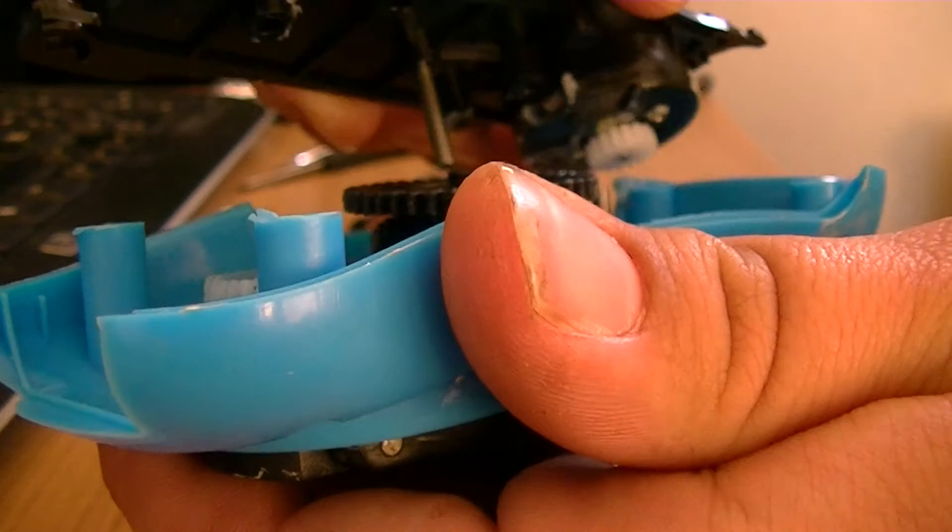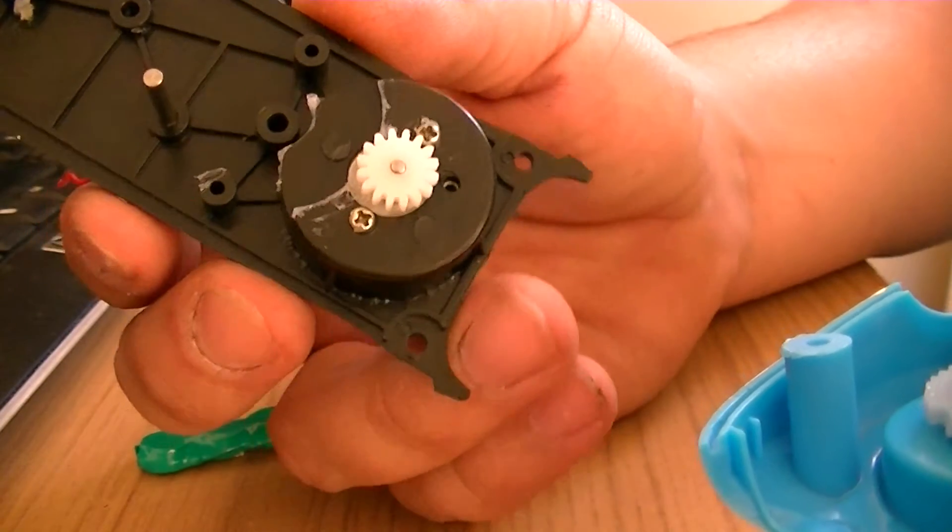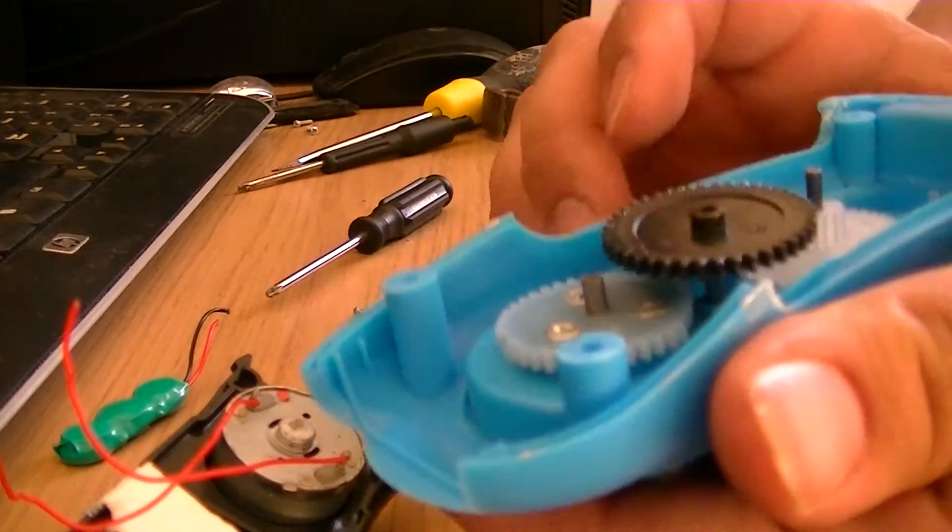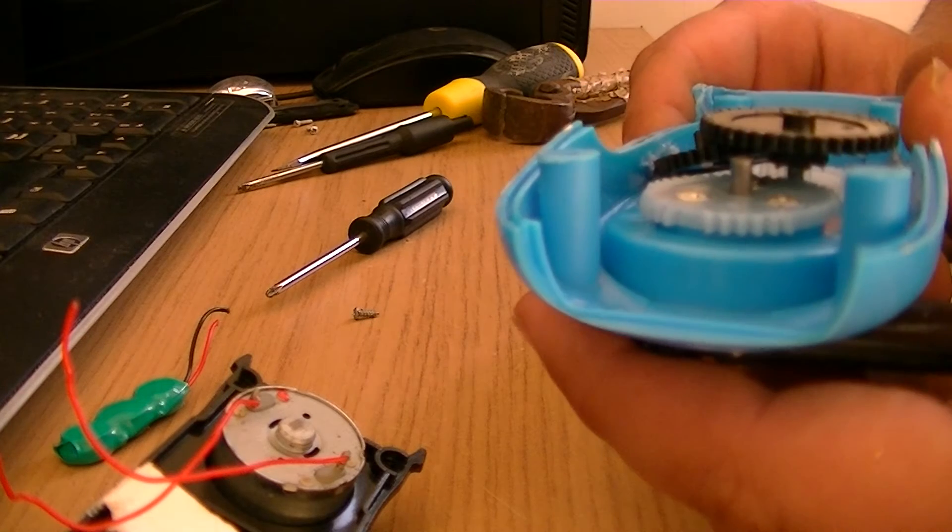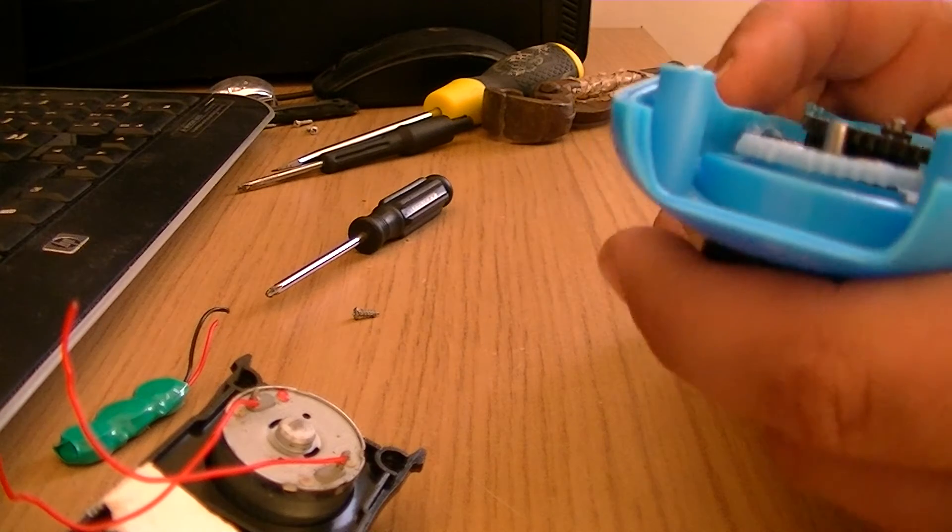I can pull it out without busting it. So yeah, you've got your 3.6 volt DC electric motor there, a few gears from the drive shaft.